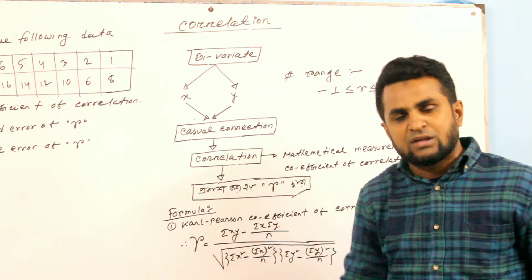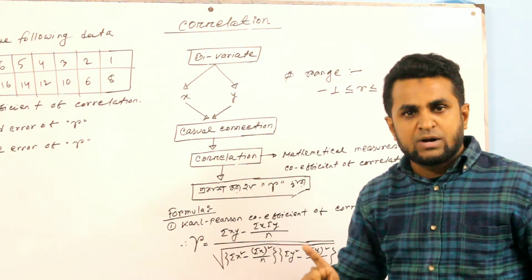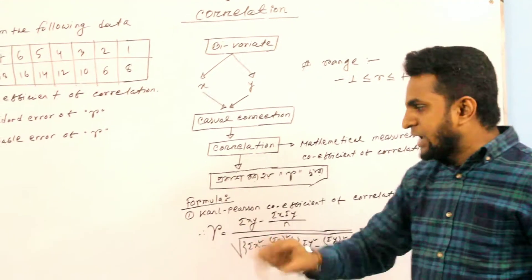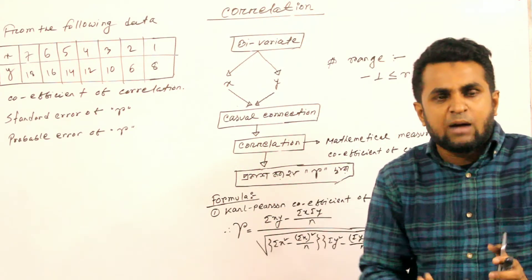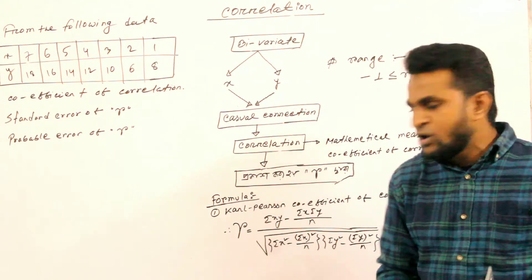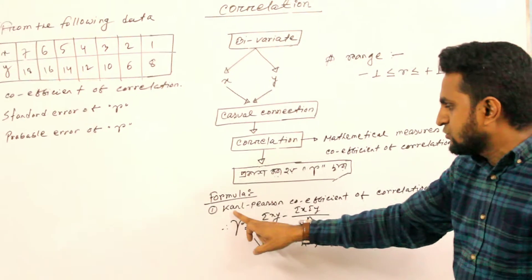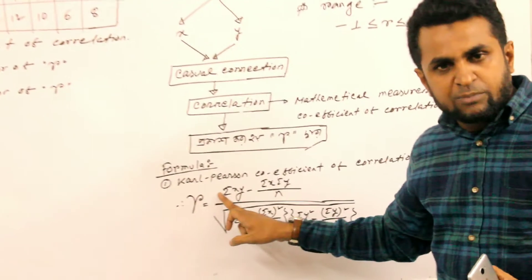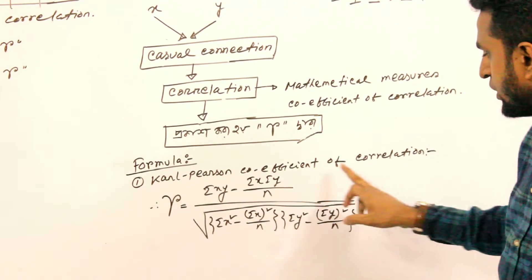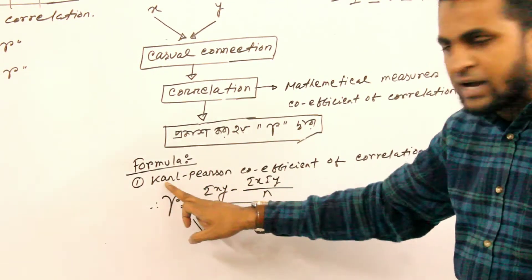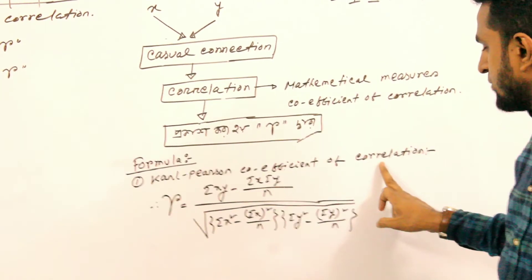Minus one to plus one. The formula — we also have the formula. Carl Pearson's formula is used for the coefficient of correlation. So, what is the formula? The coefficient of correlation — now let's go ahead. What is Carl Pearson's coefficient of correlation?